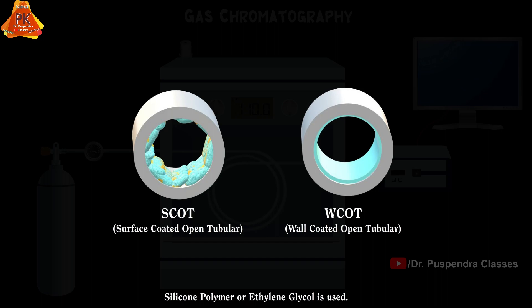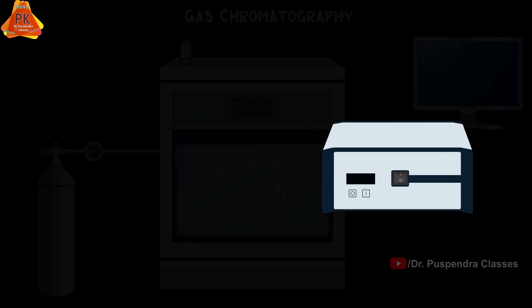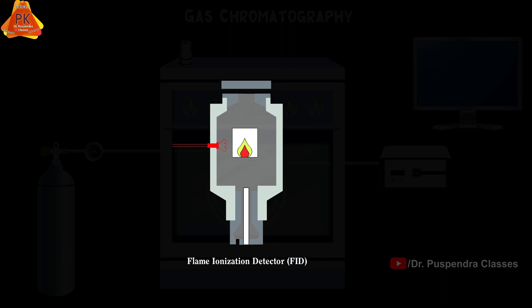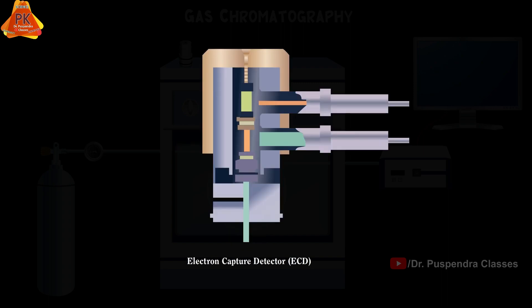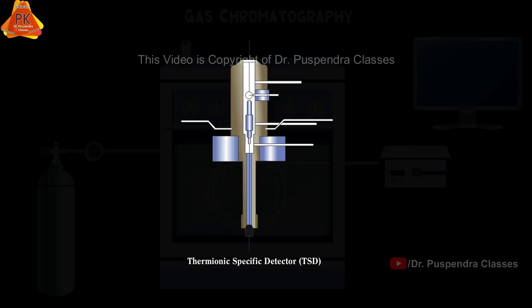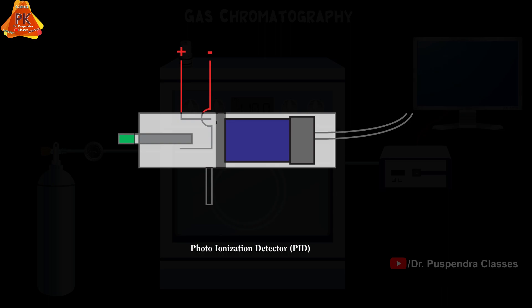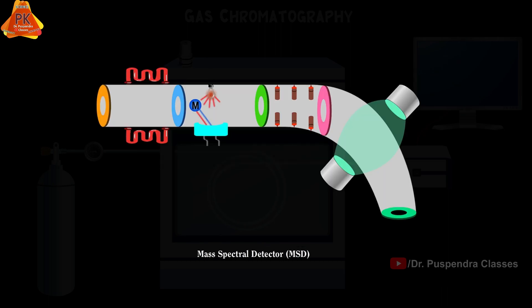Now let us understand the various detectors used in GC. Various types of detectors are: thermal conductivity detector (TCD), flame ionization detector (FID), electron capture detector (ECD), thermionic specific detector (TSD), flame photometric detector (FPD), photo ionization detector (PID), and mass spectral detector (MSD). MSD is the most sensitive detector amongst all these detectors.